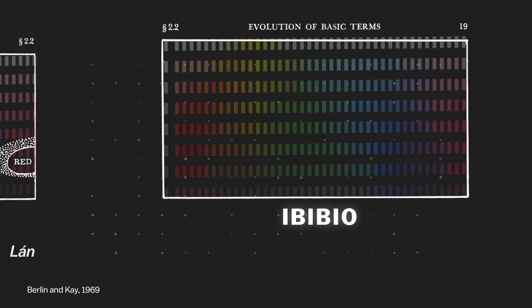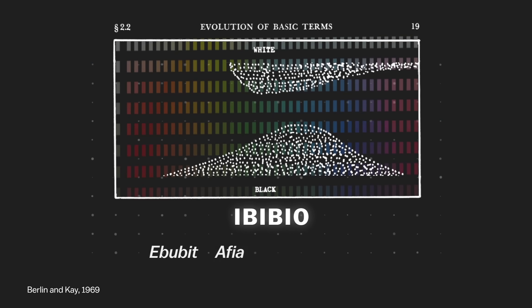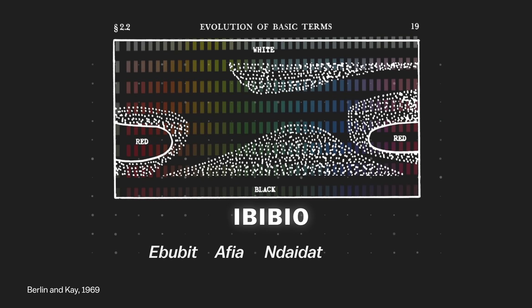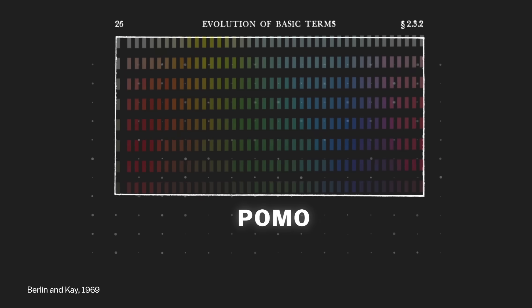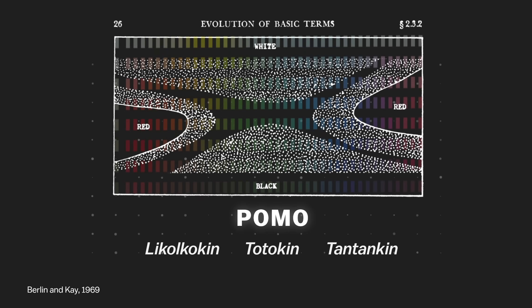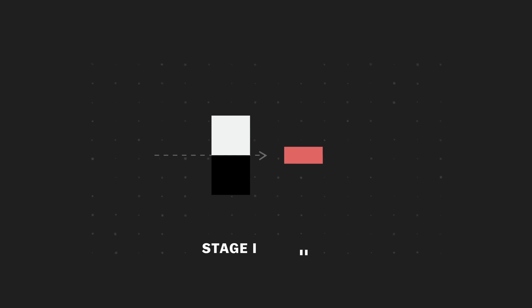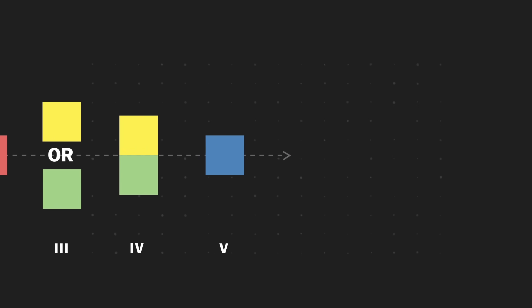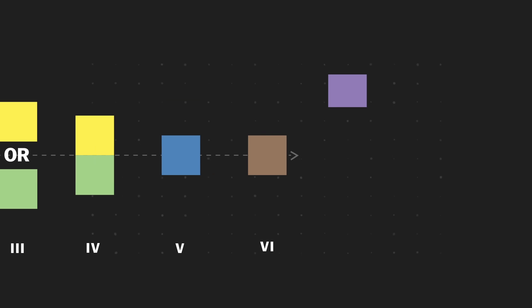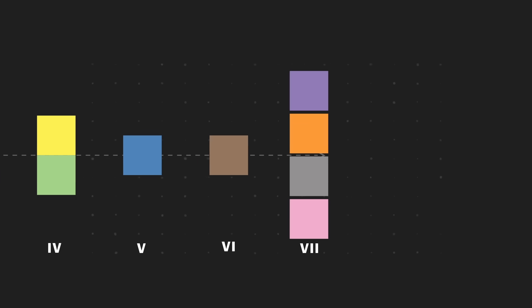If it had four terms, they were for black, white, red, and then either green or yellow. If it had only three, they were always for black, white, and red. It suggested that as languages develop, they create color names in a certain order: first black and white, then red, then green and yellow, then blue, then others like brown, purple, pink, orange, and gray.